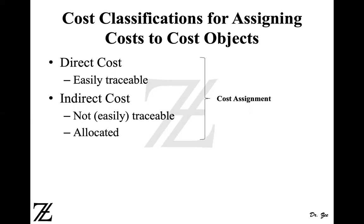When we assign costs to cost objects, assigning a direct cost is known as cost tracing. When you assign indirect costs, it's known as cost allocation. Indirect costs are allocated; direct costs are traced. Together, it's called cost assignment. So both direct and indirect costs are assigned to the cost object — direct costs are traced, whereas indirect costs are allocated.